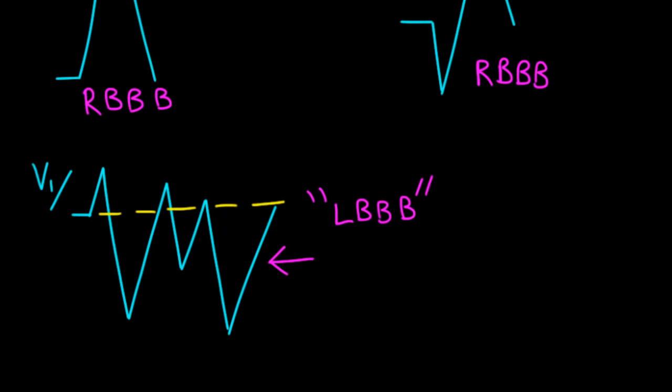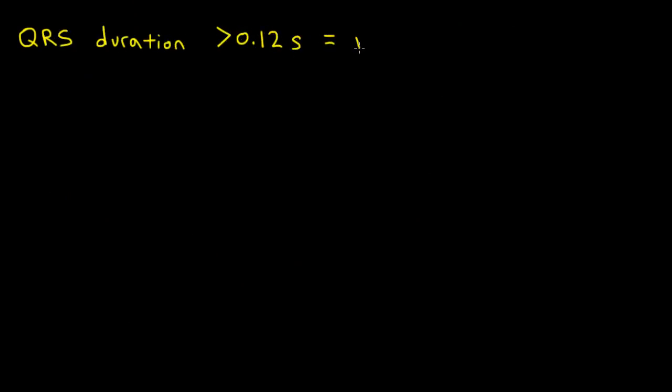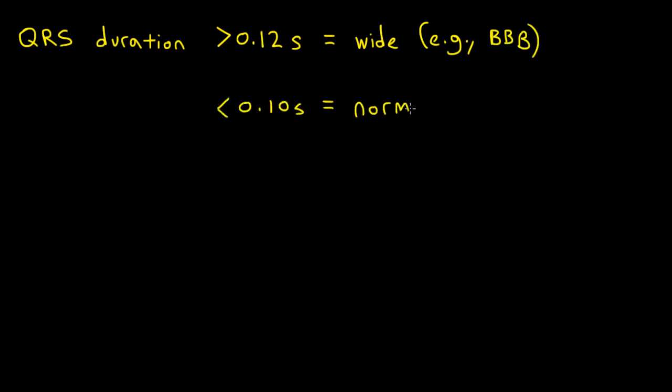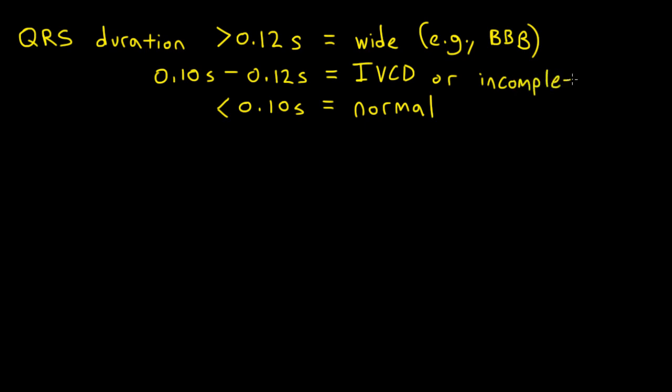A wide QRS is one of the most abnormal things you can find on an EKG. In general, the wider the QRS complex, the more likely it is that the patient has significant structural heart disease. A wide QRS is wider than 0.12 seconds, while normal is less than 0.1 seconds. When the QRS duration falls between 0.1 and 0.12 seconds, I call it an intraventricular conduction delay — patients in this intermediate range are more likely to have abnormal findings, such as chronic hypertensive heart disease. An incomplete bundle branch block refers to the same concept. Fascicular blocks are something totally different, which we'll talk about later.